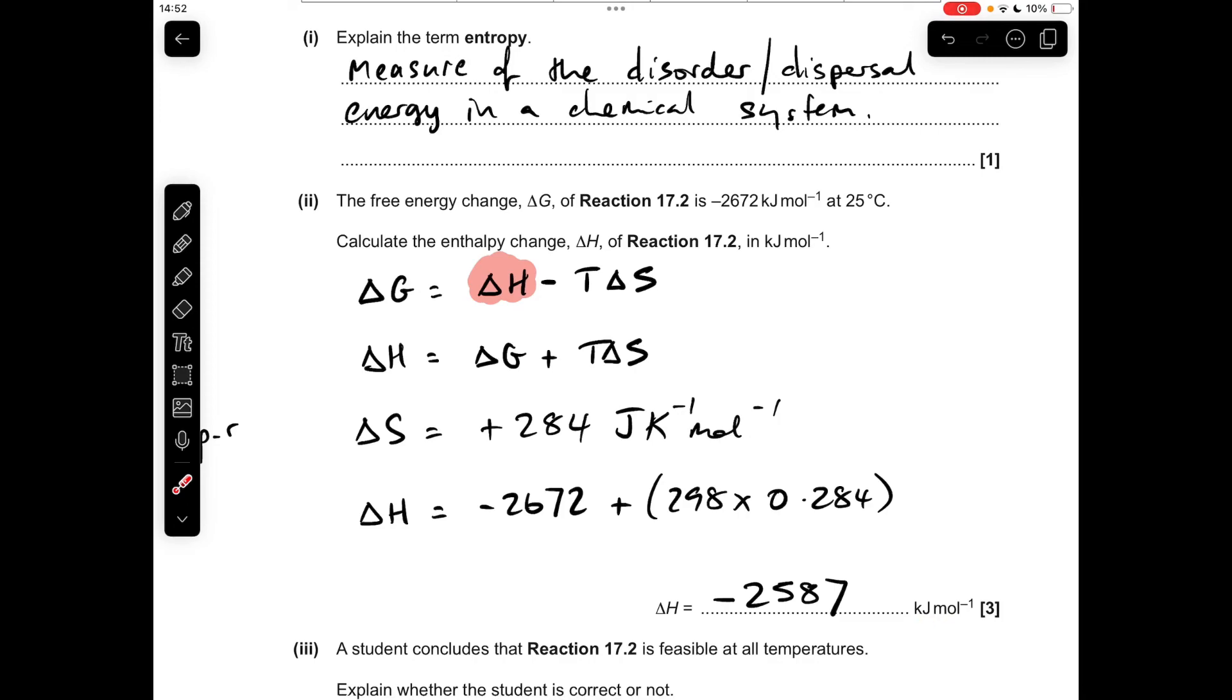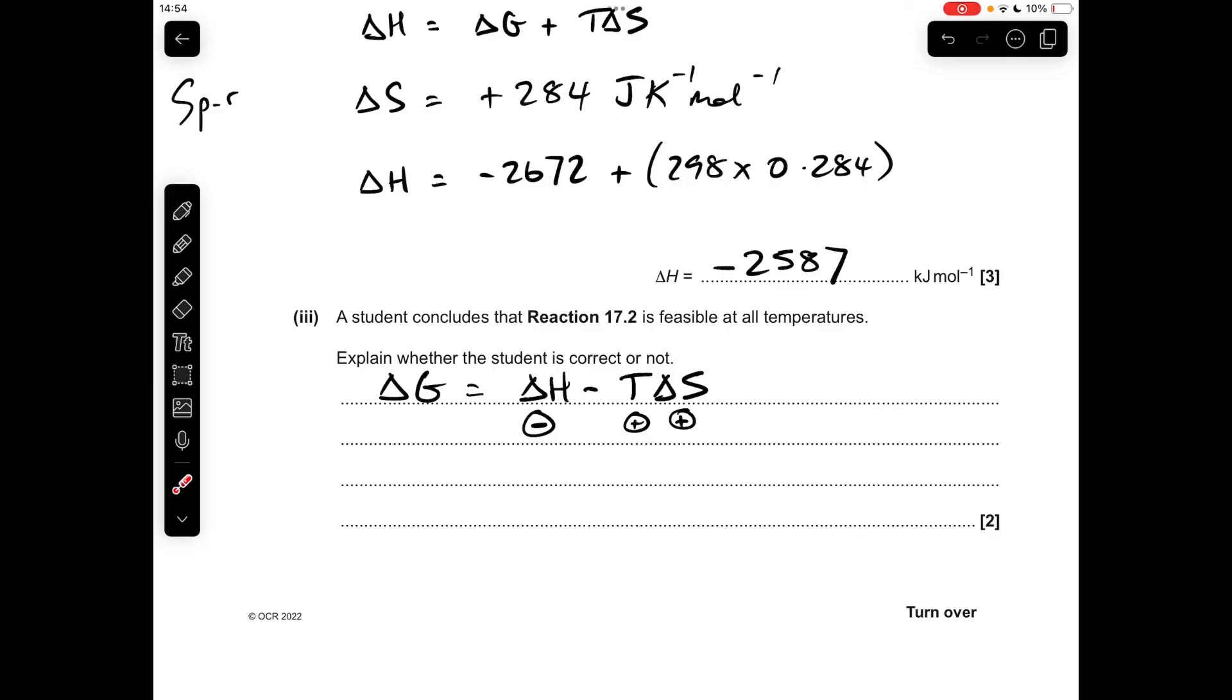Finally, is this student correct to say that reaction 17.2 is feasible at all temperatures? Well, it's all based on the Gibbs equation. For a reaction to be feasible at a particular temperature, ΔG has to be negative. So what about this reaction here? We've calculated ΔH is negative, got that there. Temperature is always positive.